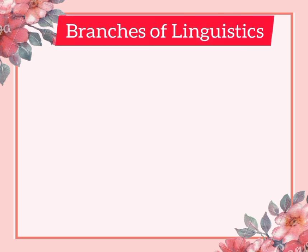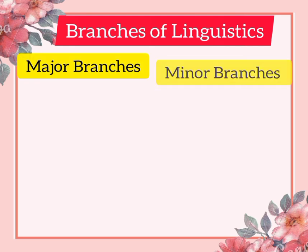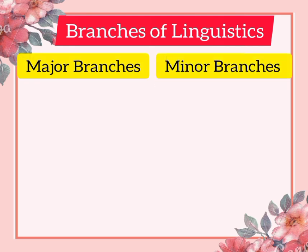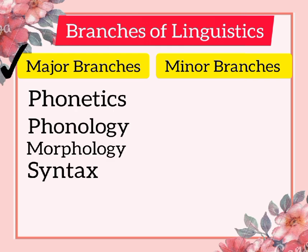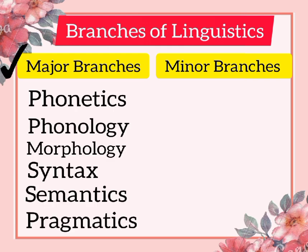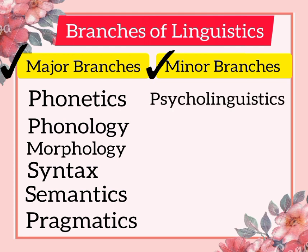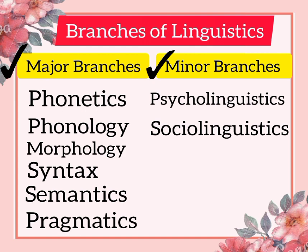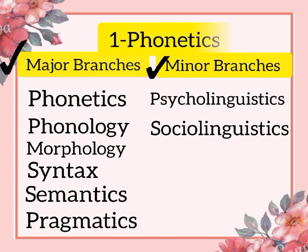Linguistics branches are divided into two categories: major branches and minor branches. Major branches are also known as micro branches, and minor branches are also known as macro branches. Major branches contain phonetics, phonology, morphology, syntax, semantics, and pragmatics. Minor branches contain psycholinguistics and sociolinguistics. Now let's discuss each branch individually.